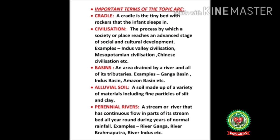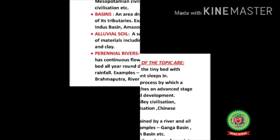'Basins' — an area drained by a river and all of its tributaries. Examples: Ganga basin, Indus basin, Amazon basin, etc. 'Alluvial soil' — a soil made up of a variety of materials including fine particles of silt and clay. 'Perennial rivers' — a stream or river that has continuous flow in parts of its stream bed all year around. Examples: River Ganga, River Brahmaputra, River Indus, etc.